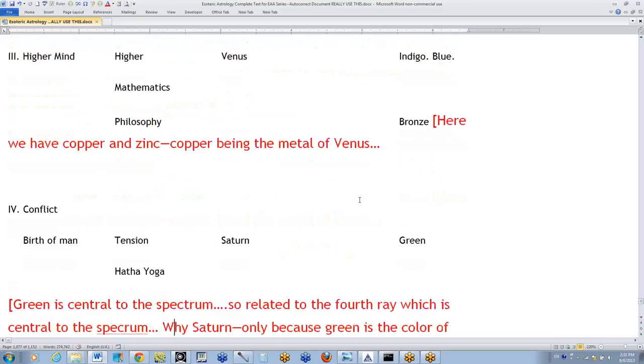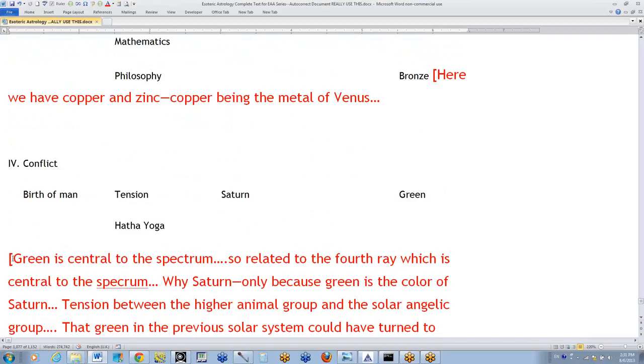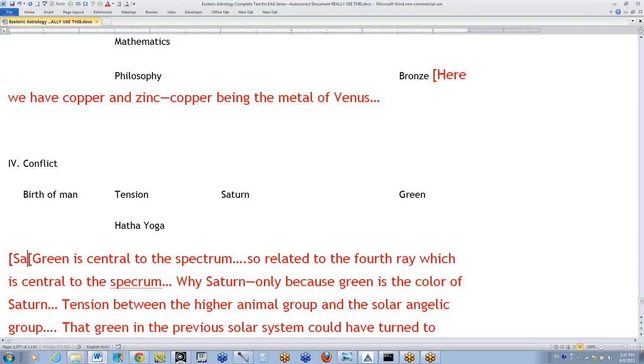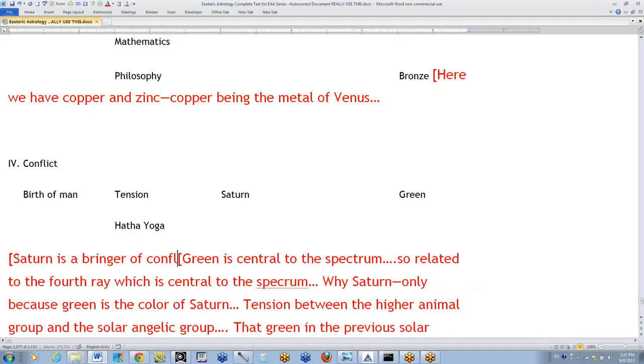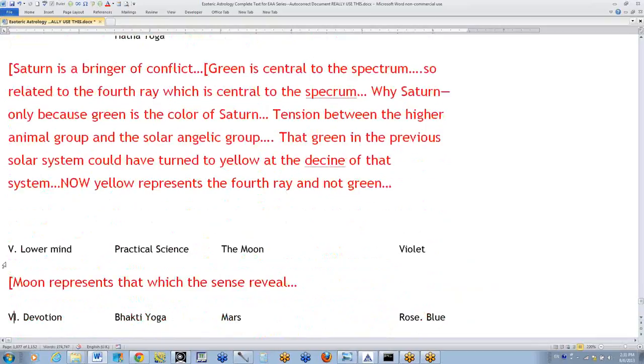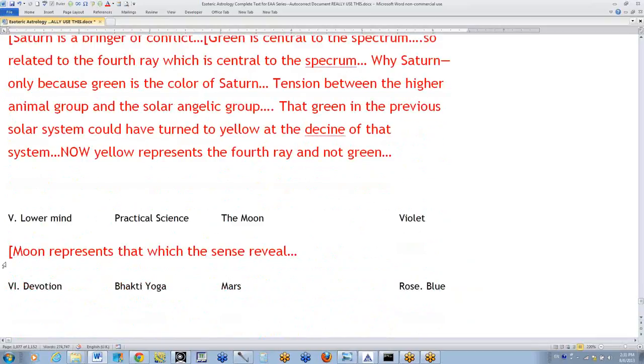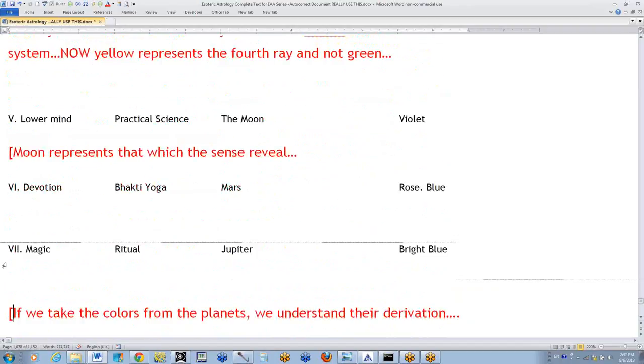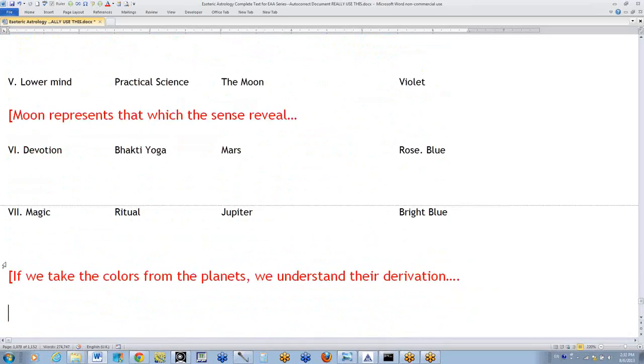Then we talked about conflict. DK does say that Saturn is a bringer of conflict. And that has to be understood. But in terms of the ray, or at least the seven rays, I think it's incorrect. Or at least it's certainly not what we deal with in our understanding at this time. So Saturn is a bringer of conflict and a destroyer. It has a lot of first ray in it. But we're talking here about the fourth ray. And it's called harmony through conflict. The lower mind connected with the moon is reasonable.